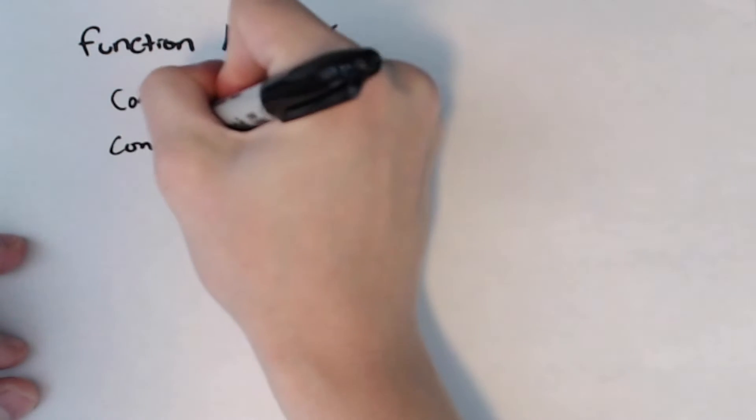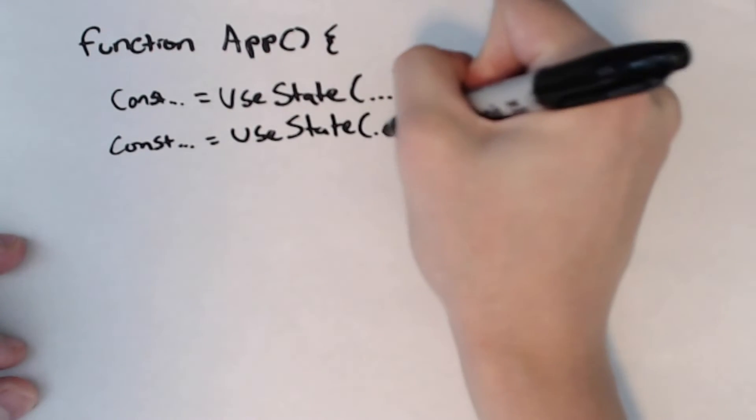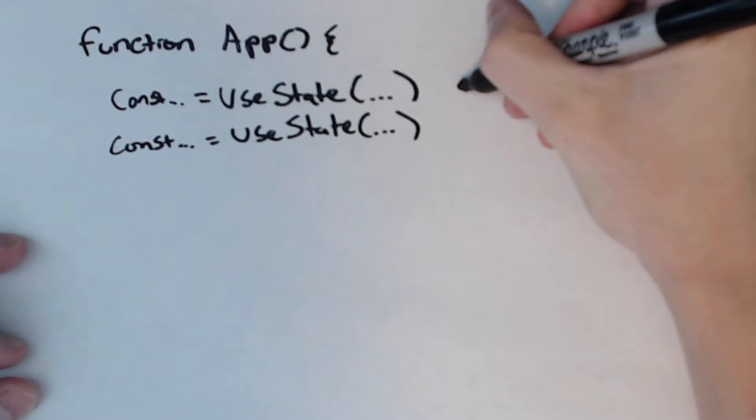React has no idea where you've assigned that to. It doesn't know if you've called that const A, B, C, my state, hello world. It doesn't know anything about what you're doing with that state.